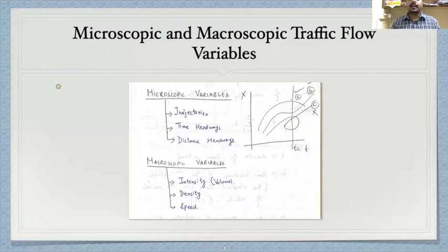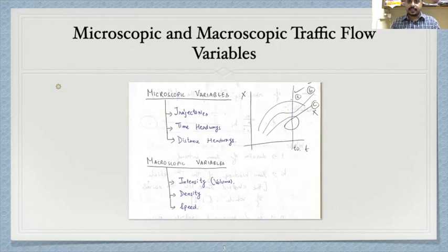Broadly, traffic variables can be divided into two categories: microscopic and macroscopic traffic flow variables. Microscopic variables are those where you consider only individual vehicles — analyzing individual vehicles is the microscopic study. If you study a group of vehicles, that is the macroscopic study. Under microscopic variables we have trajectories, time headways, and distance headways.